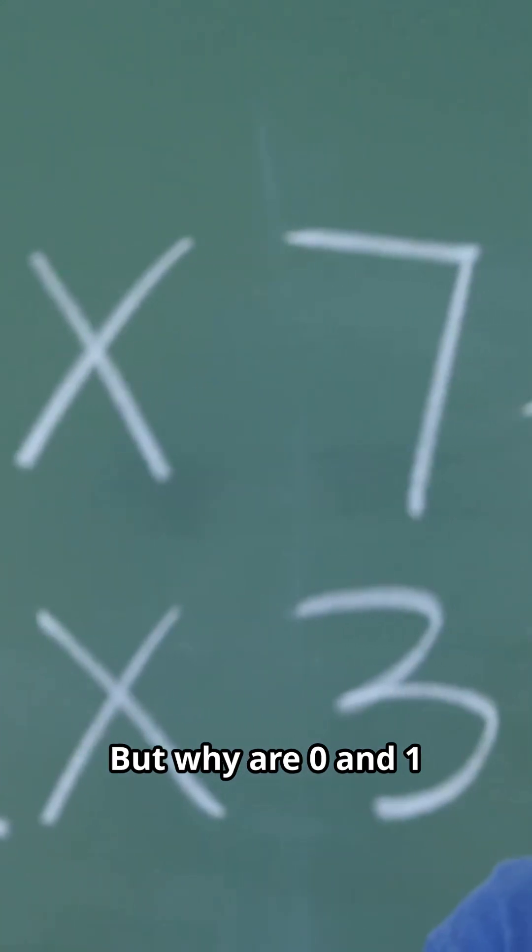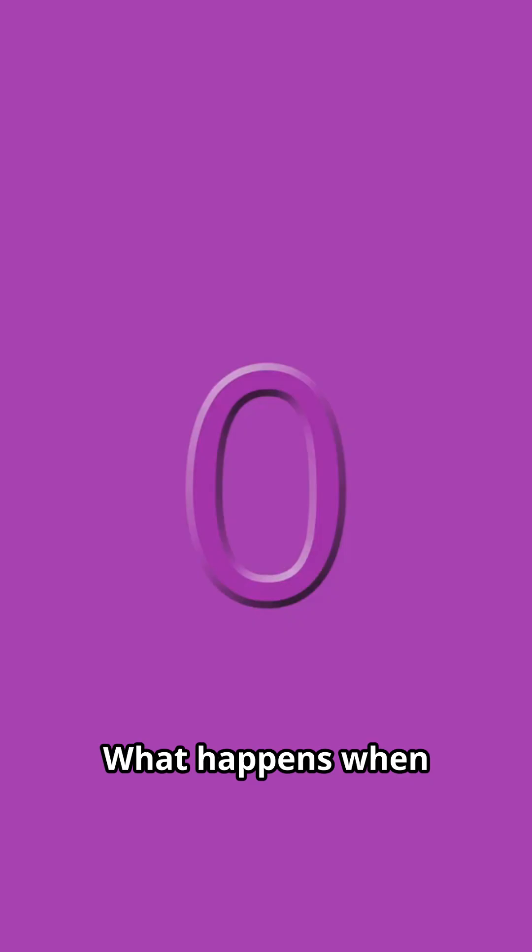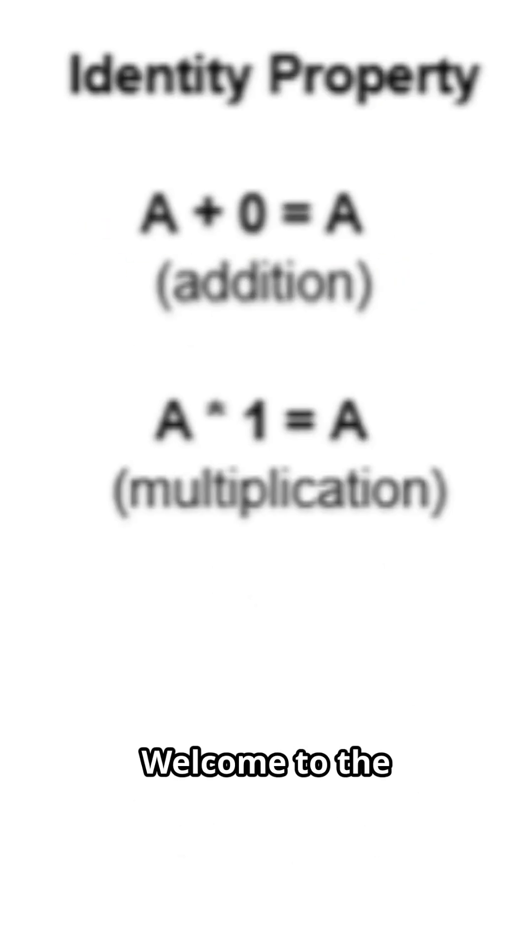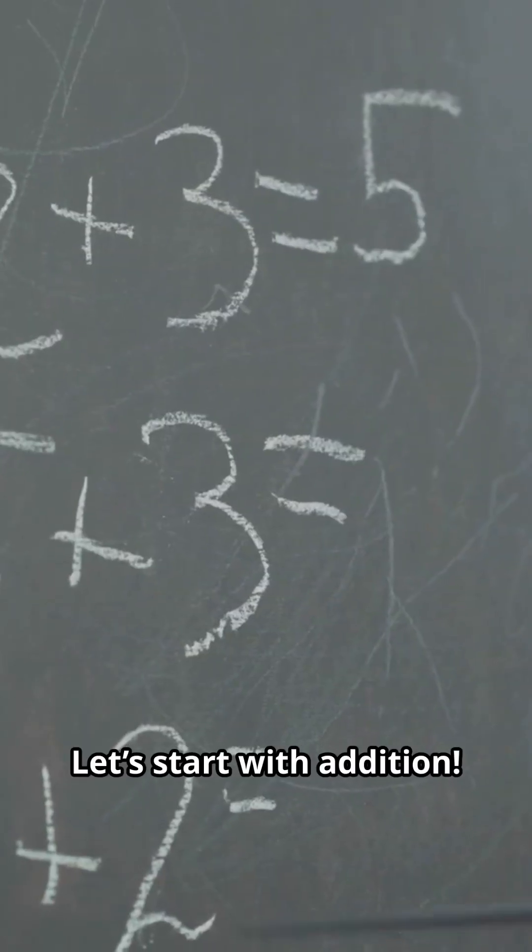But why are 0 and 1 so important when it comes to math? Have you ever wondered what happens when you add 0 to a number or multiply a number by 1? Welcome to the identity property. One of math's coolest secrets. Let's start with addition.